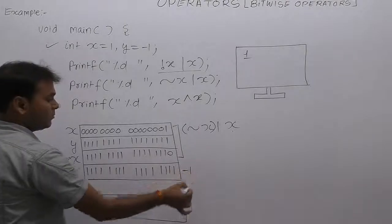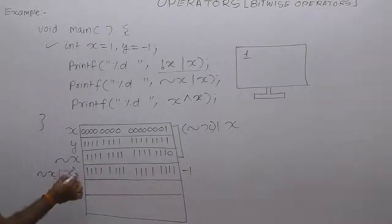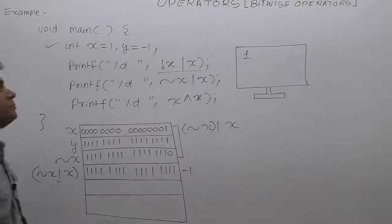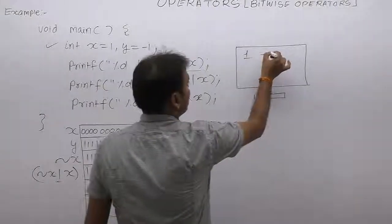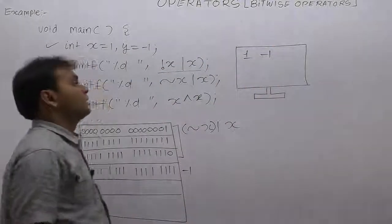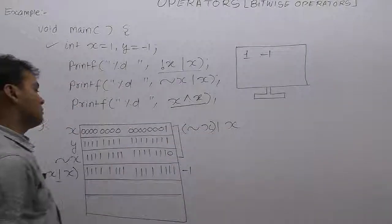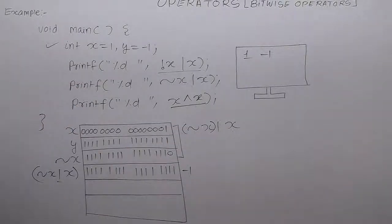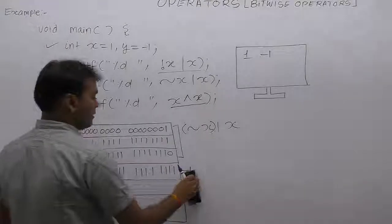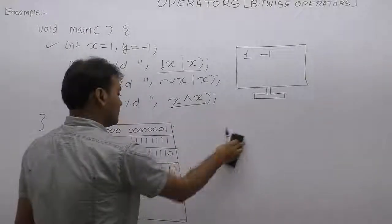This is equivalent to -1. What is the result of that expression? -1, minus one is printed. Next expression: x XOR x. This is interesting.